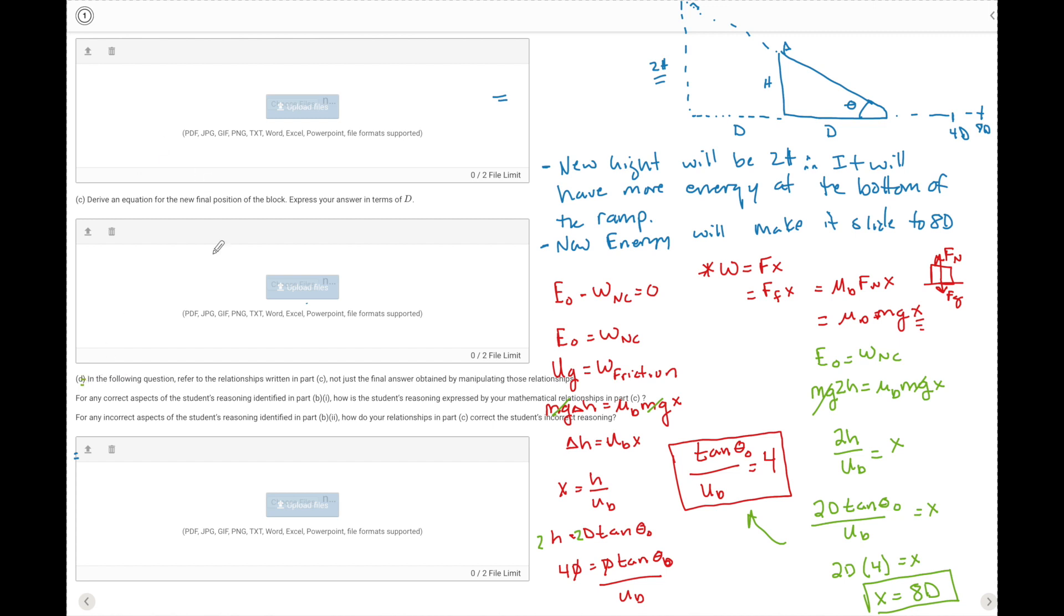In part D, they want you to relate B1 and B2, the statements that you made, and if this supported that information. For any correct aspects the student made: We have a new height of 2H - we show that by the similar triangles. It will have more energy - we show it has 2MgH at the bottom as opposed to just MgH. The new energy will make it slide to 8D - we see it went to 4D in the first one, then it doubled and went to 8D. You don't have to worry about B2 because there were no incorrect statements.